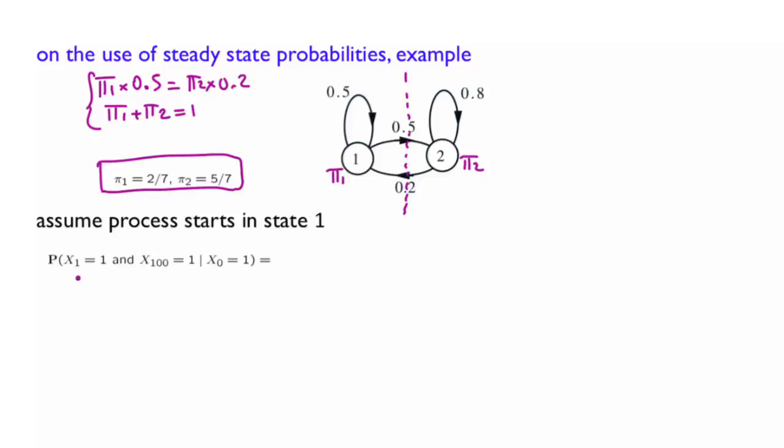The conditional probabilities of two things happening is the conditional probability of the first one happening, x1 equals 1 given x0 equals 1, and given that the first one happens, the probability that the second one happened: x100 is 1 given x1 equals 1 and x0 equals 1. So what is this? This first one is the transition probability from state 1 to state 1, P11.